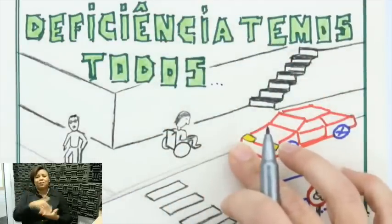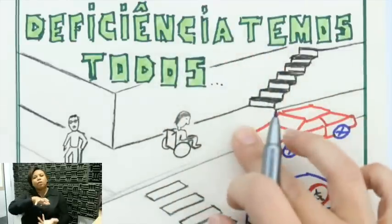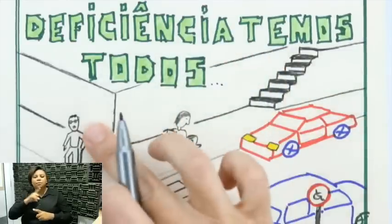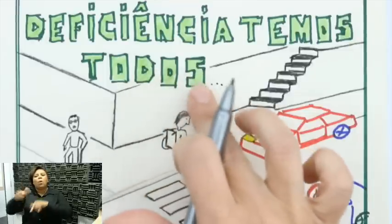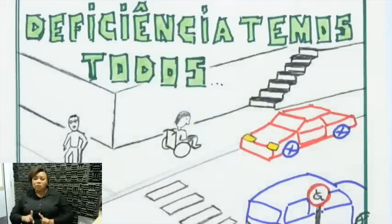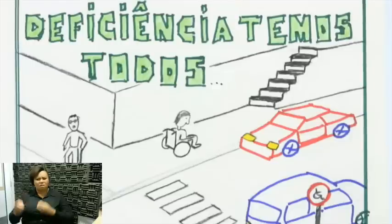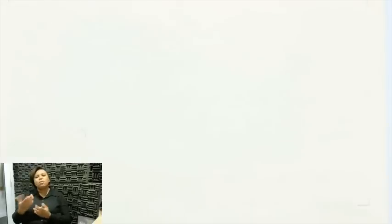Quero chegar no final dessa aula na deficiência como mais um jeito de ser e de estar no mundo — com uma particularidade: diferente de gênero ou raça, deficientes um dia todos seremos. Porque é exatamente disso que trata nossa aula. Vou trocar para uma folha lisa e começar a colar algumas figurinhas para a gente pensar sobre essa questão.